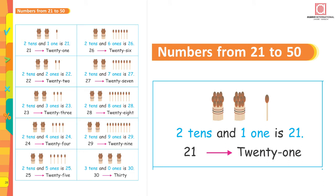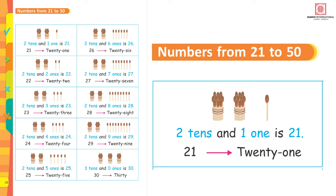Look at the picture — there are two bundles of 10 matchsticks, and in the ones column there is one loose matchstick. So two tens equals 20, and 20 and one is 21.